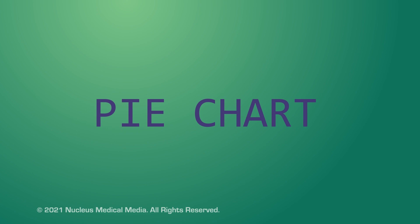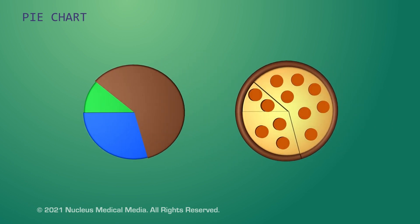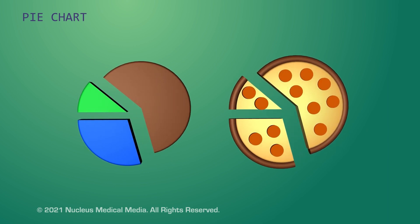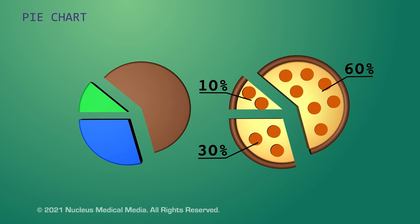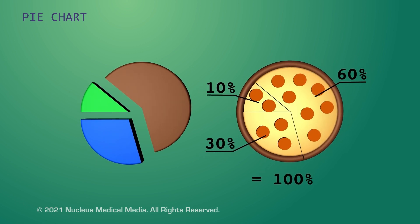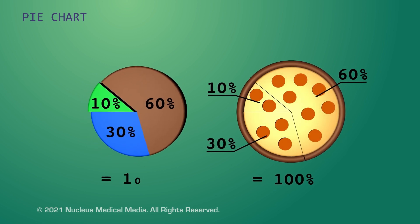The last type of graph we'll talk about is a pie chart. A pie chart shows the various parts that make up a whole. A pie chart often looks like a pizza cut into uneven slices. Just like all the pizza slices put together make up 100% of the pizza pie, all the sections of a pie chart represent different amounts that add up to 100% of the total amount.